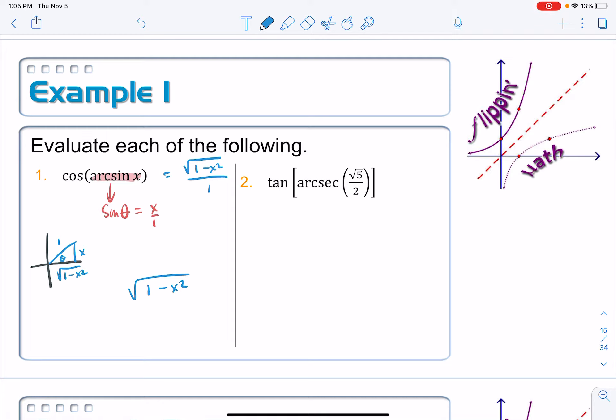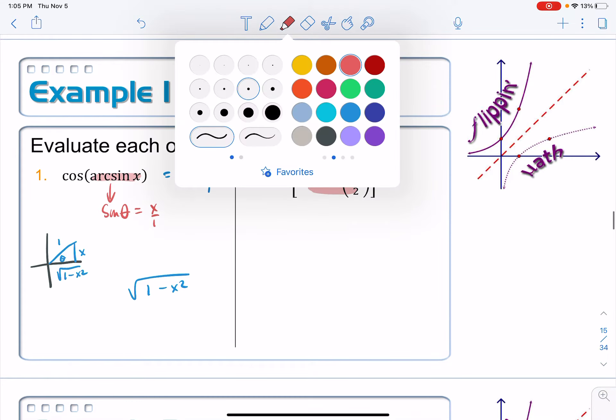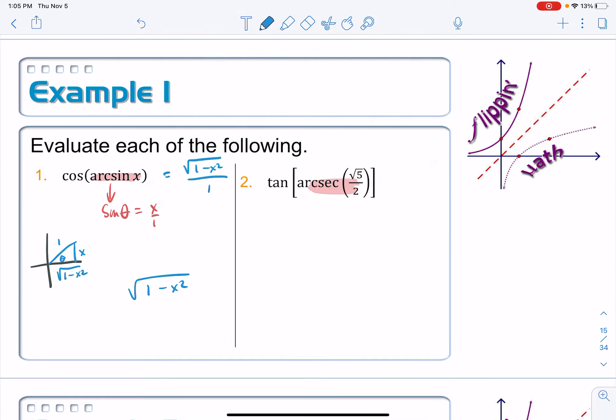Okay, we're going to do the same kind of thing over here on question number 2, but we should get a numerical answer when we're all done. When I take the arc secant of something, I get an angle. If I plug an angle into tangent, I should get a ratio back. So once again, that is going to establish an angle which will look sort of like this.